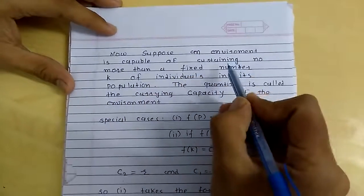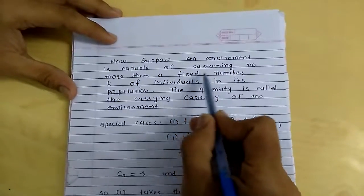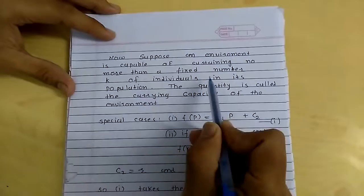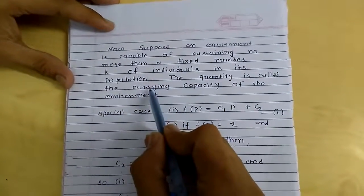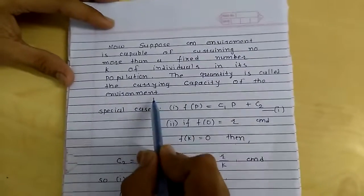Now, suppose an environment is capable of sustaining no more than a fixed number k of individuals in its population. This quantity is called the carrying capacity of the environment.